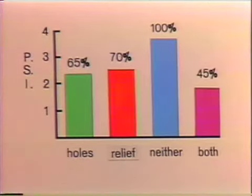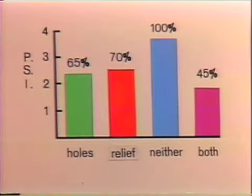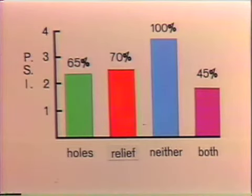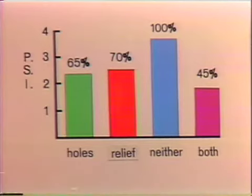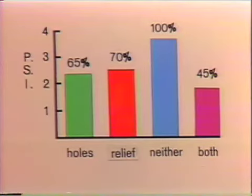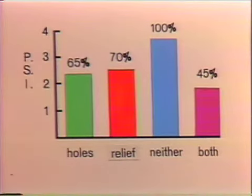Dr. Franks went on to modify a custom acrylic impression tray in two ways to see if this would have any effect upon the final pressures. He placed a number of holes in the impression tray and found that these holes reduced the pressures developed inside considerably. He also modified his tray by placing a spacer between the acrylic tray and the study model, which also reduced pressures considerably. When both the holes and the relief space were used together, the pressures in the final impression were reduced considerably.